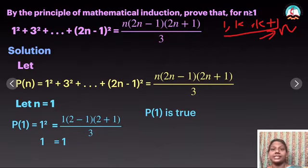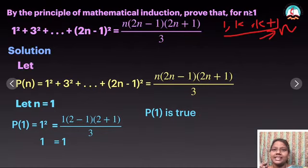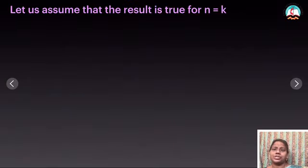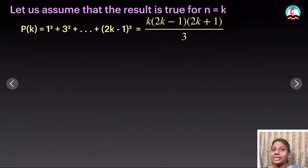We can think of more examples — even while cooking, your mom can take only one grain of rice and check whether it is edible or not. We will not check all the rice from the pan. As like that, we have proved the first step. Now let us assume the result is true for n equal to k — that means the person climbed some more steps. So P(k) is the expression with n substituted by k.